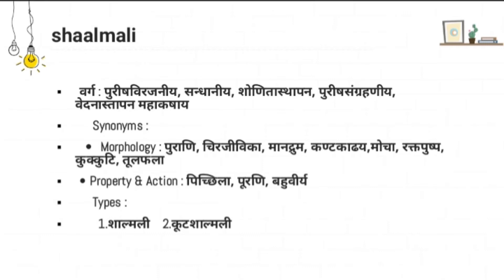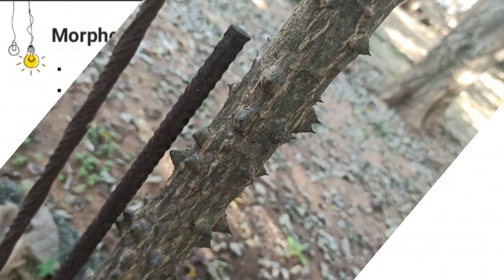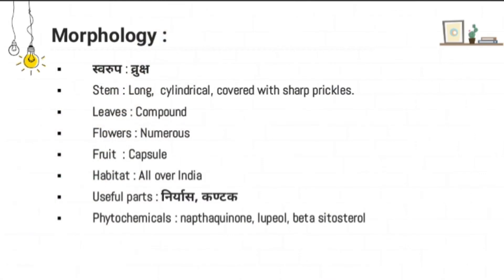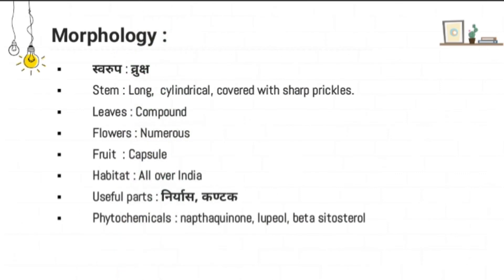Regarding types, Shalmali and Kuta Shalmali are the two types of Shalmali. In terms of morphology, it is a Vruksha — a very tall tree with a single woody stem. The stem is attached by numerous pines which are spiny in nature. The stem is long, cylindrical, covered with sharp prickles. Leaves are compound, flowers are numerous and red in color. The fruit is a capsule, and it is available all over India. Useful parts are Niryasa and Kantaka.